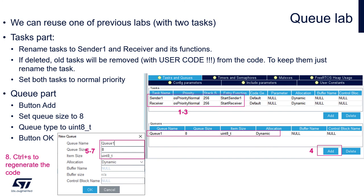The rest of the parameters we'll keep as default. In the same tab — tasks and queues — there is a space to specify the queues we would like to have within our FreeRTOS-based application. Within the queues area, press Add. Then specify the queue name as queue1, queue size to 8, and item size to uint8_t. Allocation by default is dynamic. Once done, press OK.